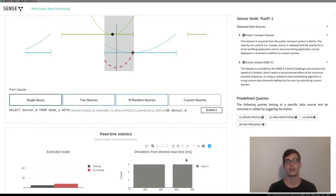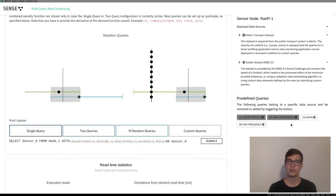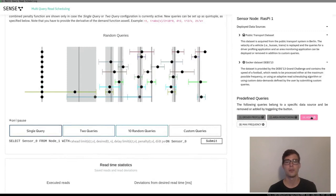In the panel below, you can see the saved reads and a histogram showing the deviations from the desired return. We currently replay the data from a public transport data set, and now I will simultaneously deploy queries for multiple applications to briefly show the read sharing aspect of our solution in a more realistic environment.